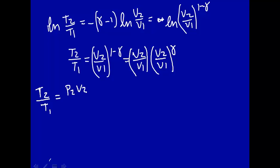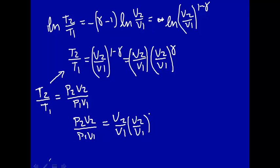It's just P2 V2 over P1 V1 for an ideal gas, so plug this expression in there, and we have P2 V2 over P1 V1, that's equal to V2 over V1. Look, that's going to cancel out.